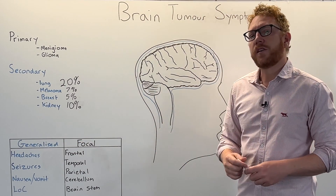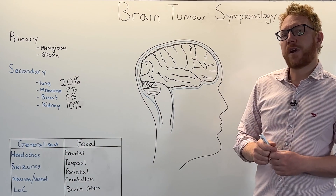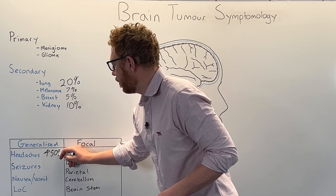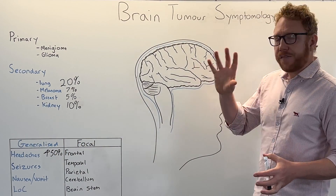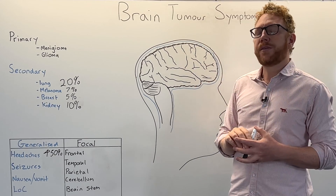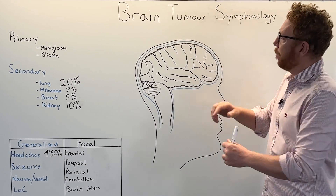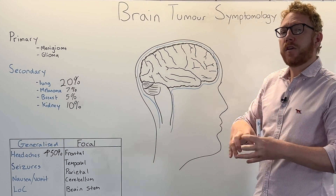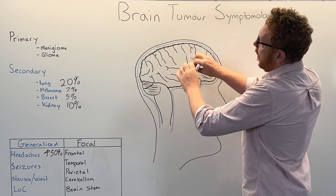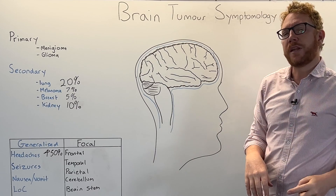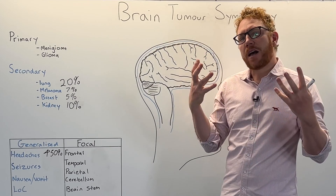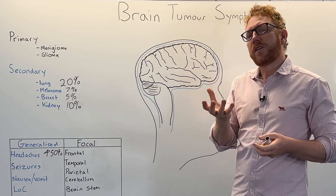Starting with generalised symptoms, the most common symptom associated with brain tumours is a headache - well over 50% of persons with brain tumours will experience one. Brain tissue itself doesn't have pain receptors, so other structures like the meninges, the wrapping of the brain, report pain when compressed or stretched. If the brain is swelling or inflammatory chemicals irritate the meninges, this causes headaches that are typically dull, not well localised, and worsening over time.